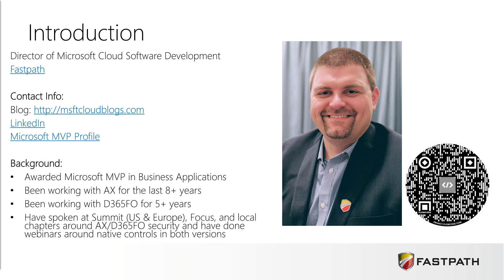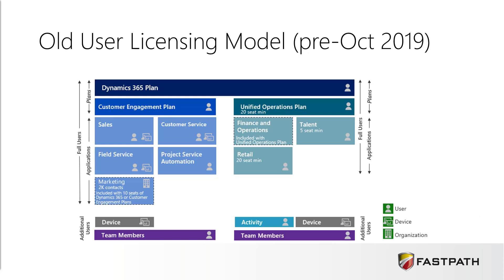Jumping in, if we want to take a look at where Microsoft currently started with licensing of D365, this would be the licensing model of pre-October 2019. You can see you have a number of different options when you go through this licensing plan. You have the D365 license plan that would cover both customer engagement and unified ops. You could buy just a customer engagement plan to get all of the customer engagement side, or the unified ops plan to get all of the unified ops side, and then you can actually go in and purchase those individual modules as well. You can also have your team member activity at the bottom as those licenses were determined there as well.